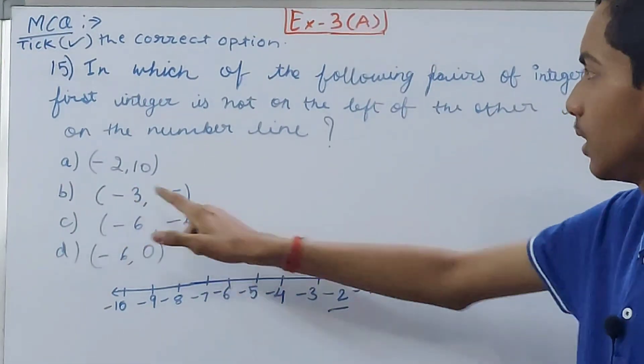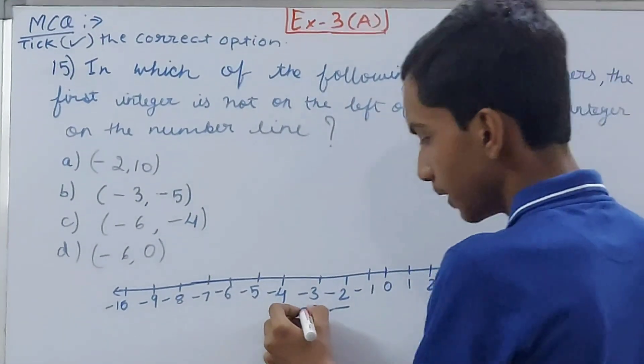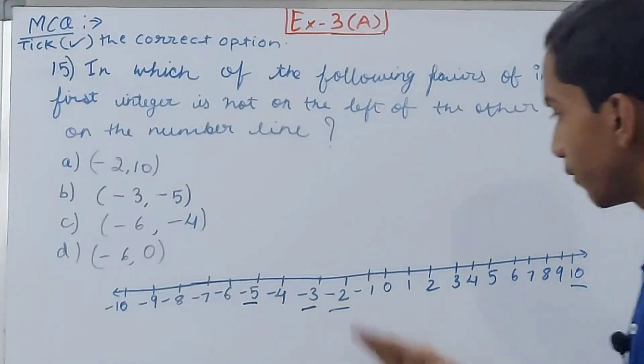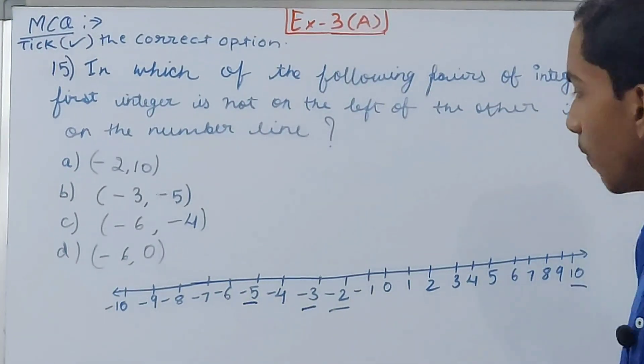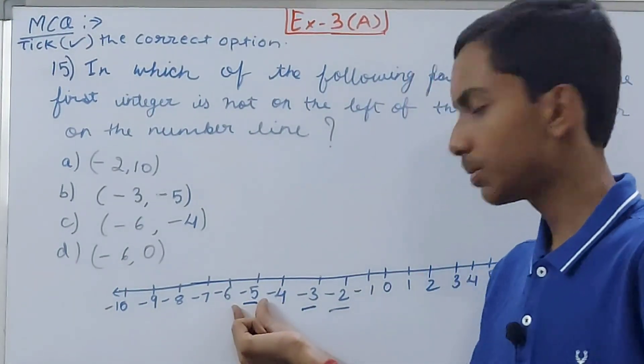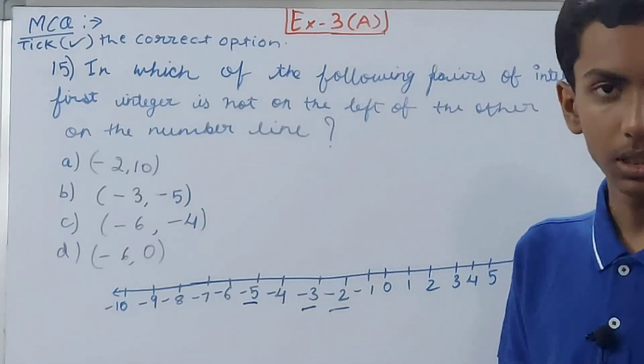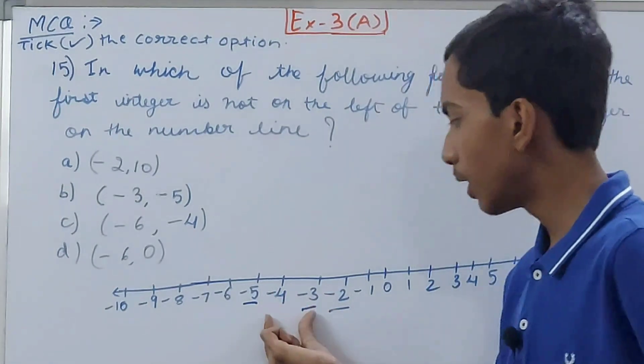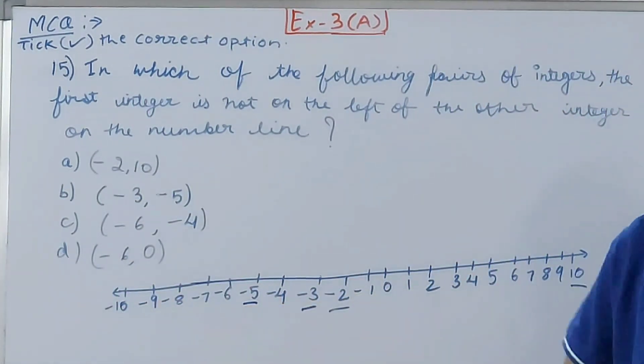And here it is. Then see the next pair: -3 and -5. Let's see, this is -3, the first integer. This is -5, the second integer. So is the first integer to the left of the second integer? No. Why? Because you can see this is -5, the second integer, and to its right we have -3. So this statement is true. This pair is fulfilling the condition that it should not be on the left.